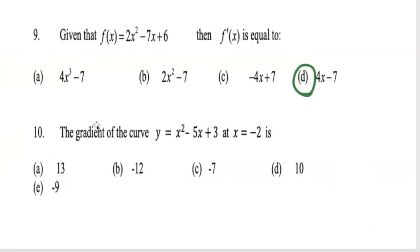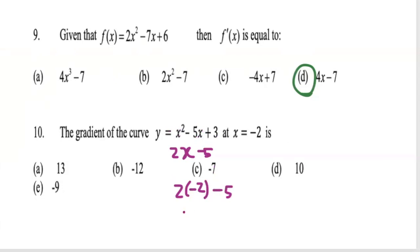Question 10: find the gradient of the curve at x equals negative 2. We differentiate: carry the 2 in front and subtract 1 from the power to get 2x. For minus 5x, the x disappears leaving minus 5, and the constant 3 becomes 0. So f prime of x equals 2x minus 5. Replacing x with negative 2: 2 times negative 2 is negative 4, minus 5 gives negative 9. So the gradient is negative 9.